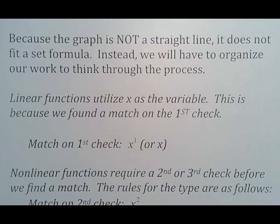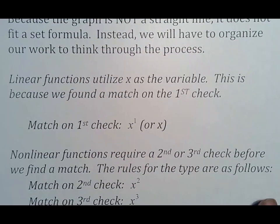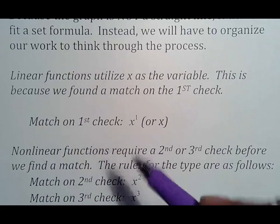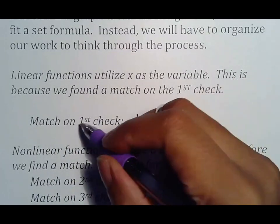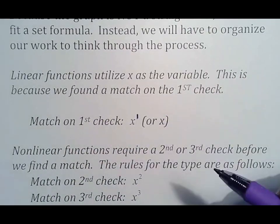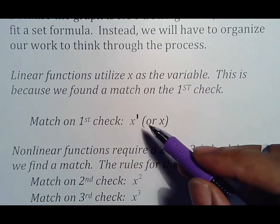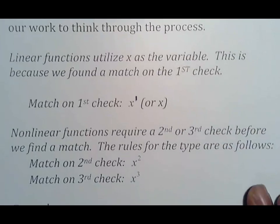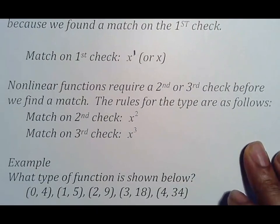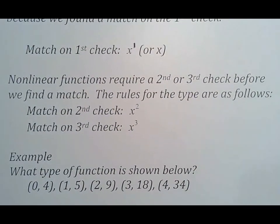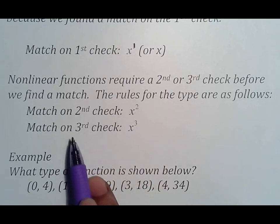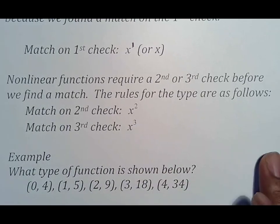Linear functions utilize x as the variable. This is because we find the match on the first check, in other words, x to the first. This represents the number of checks we had to do before it matched. Nonlinear functions have a second or third check before we find a match. The rules for these are as follows: if it takes two checks to make a match, it'll be x to the second. If it takes three checks to make a match, it'll be x to the third.